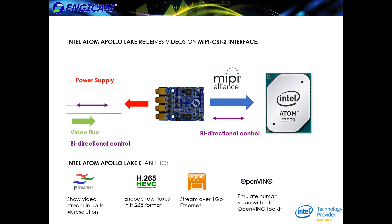The Intel OpenVINO Toolkit allows analysis of video streams. The toolkit permits emulating human vision by taking advantage of convolutional neural networks. In addition, it extends workloads over Intel hardware, including accelerators, and maximizes performance.